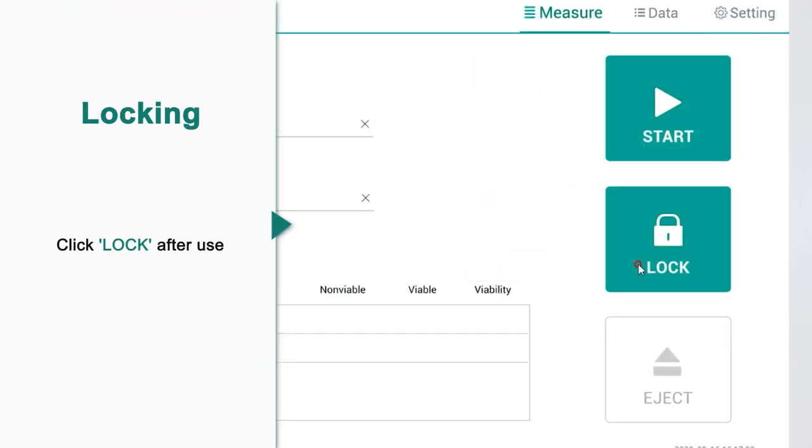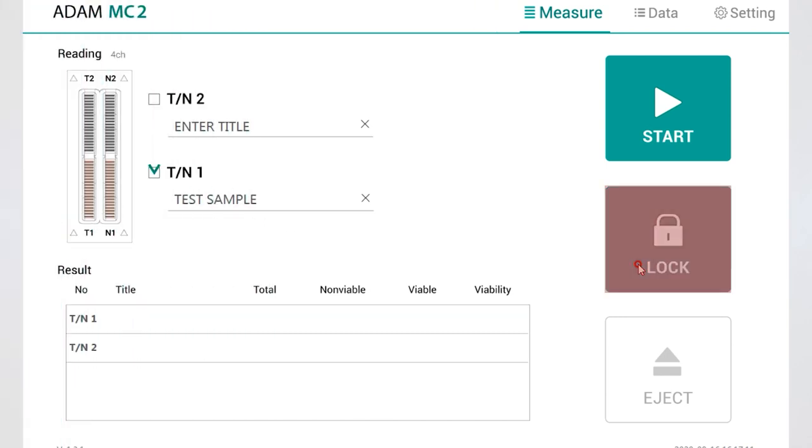Lastly, locking. When you turn off the Adam MC2, click the lock button on the measure tab.